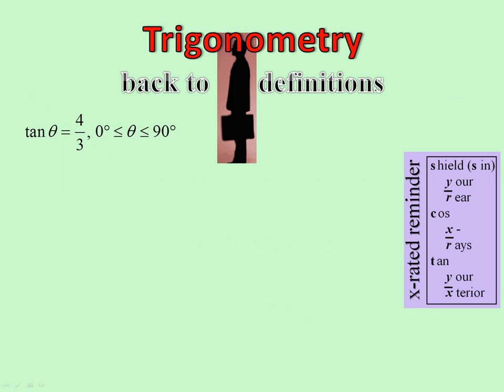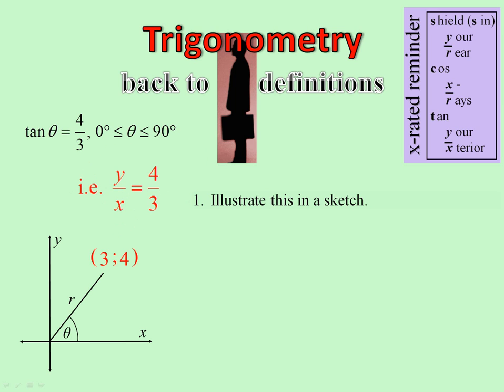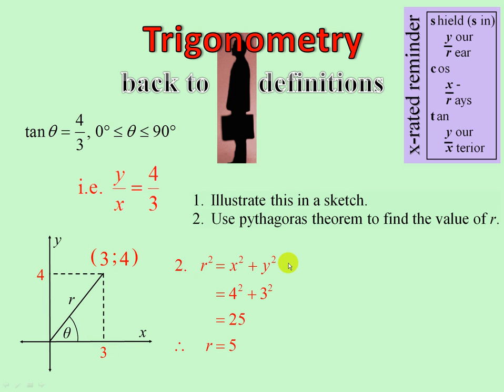Now, often you're asked to find amounts without using a calculator. Tan of theta equals 4 over 3 between 0 and 90. That's actually told you something. That says Y over X. So, it's told you that Y can be 4 and X can be 3. The first question says, illustrate this on a sketch. So, we need to draw our diagram in the first quadrant showing Y is 4, X is 3. There we are, like that. X is 3. Y is 4. There is our diagram. That's how we illustrate it. Use Pythagoras' theorem to find the value of R. R squared is X squared plus Y squared. And we get R equal to 5.